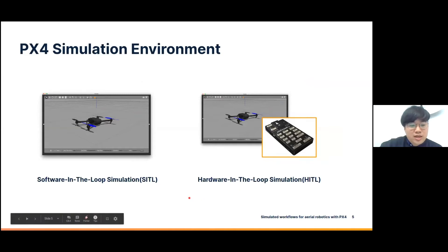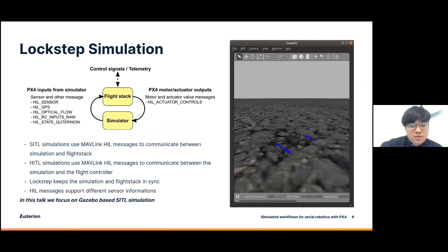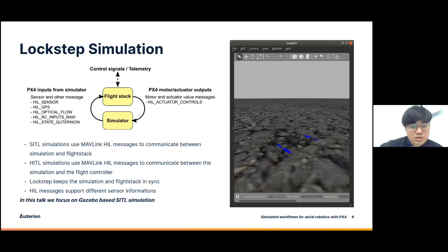You can run the PX4 simulation on either a software-in-the-loop simulation, meaning you can run the PX4 Autopilot directly on your computer, or a hardware-in-the-loop simulation where you run the autopilot on the flight controller and make it communicate with your simulator. The simulation runs in a lockstep scheme where the flight stack sends an actuator control, which triggers one time step in the simulation. The simulation returns updated sensor information to the flight stack, which also progresses one step, and it continues on this loop. This ensures the simulation and the flight stack are in sync, and messaging is done through HIL MAVLink messages.